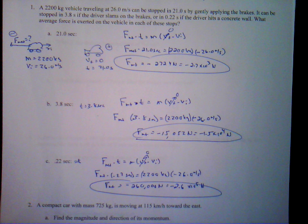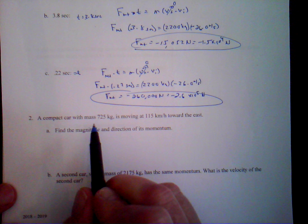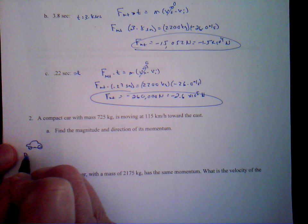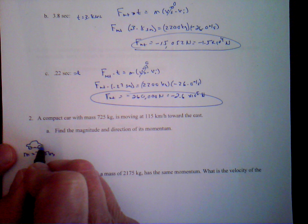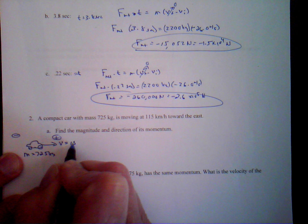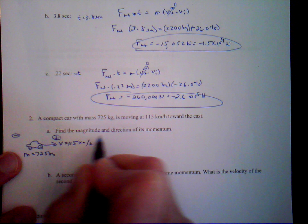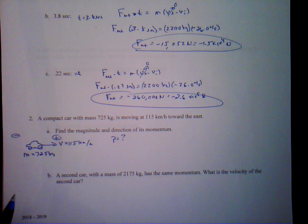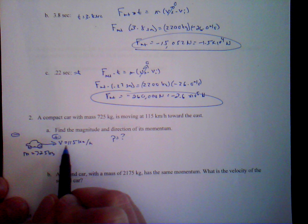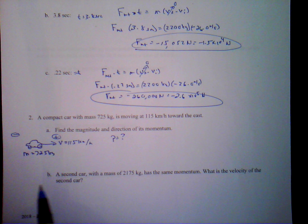Let's go to number 2. A compact car with mass 725 kilograms is moving at a velocity going to the east — so east is positive and west is negative. This velocity is 115 kilometers per hour. We want to know the magnitude and direction of this momentum. Remember, momentum is a vector quantity — we need both its mathematical value and its direction. Momentum is usually, by convention, in units of kilograms, meters, and seconds. So we're going to convert this from kilometers per hour to meters per second.